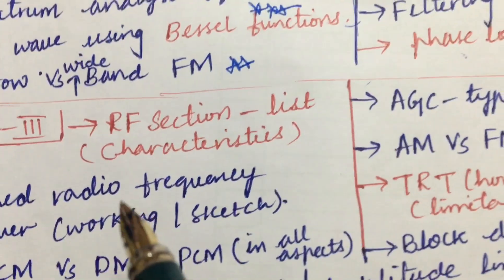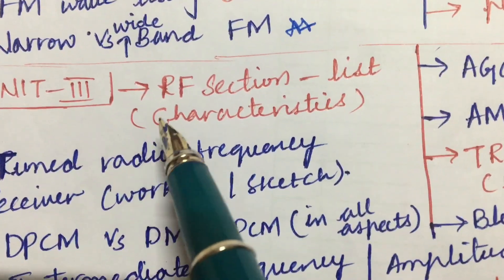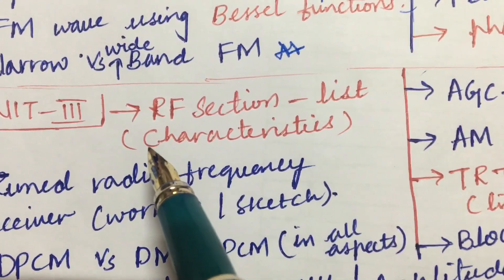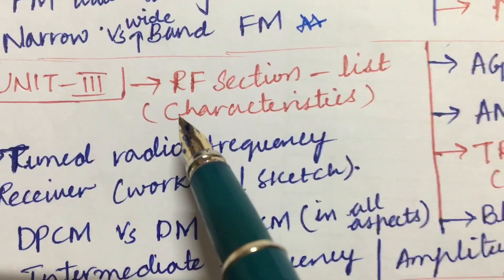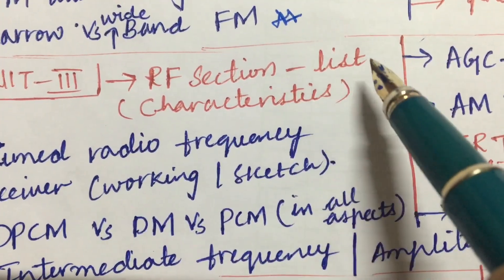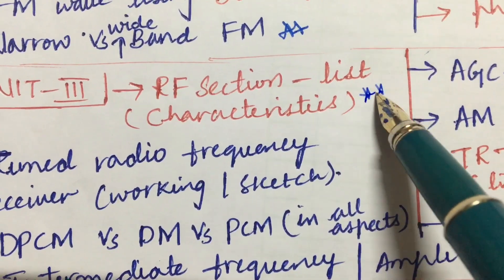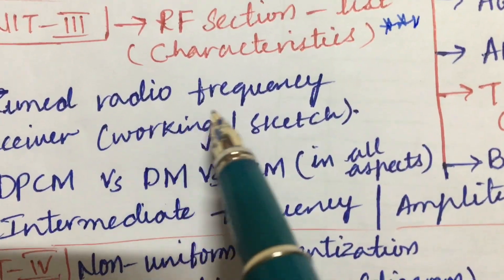Dear students, I hope you are working out all the concepts which I am going to highlight here. The third unit also carries two questions as per the COVID pattern, you are going to get two questions even from this RF section. List and characteristics may be one of the questions.